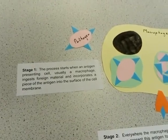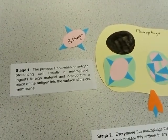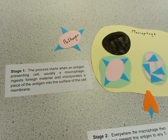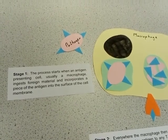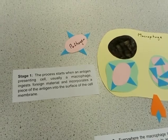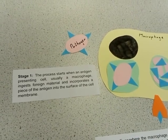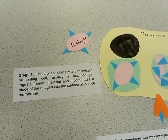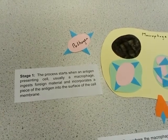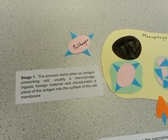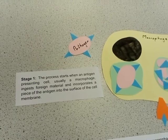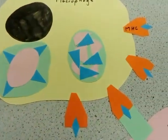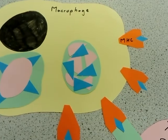Cell-mediated immunity refers to the production and use of T-cells within the immune system. The process starts when an antigen-presenting cell, usually a phagocyte, ingests foreign material and incorporates a piece of the antigen onto its cell surface on an MHC molecule.